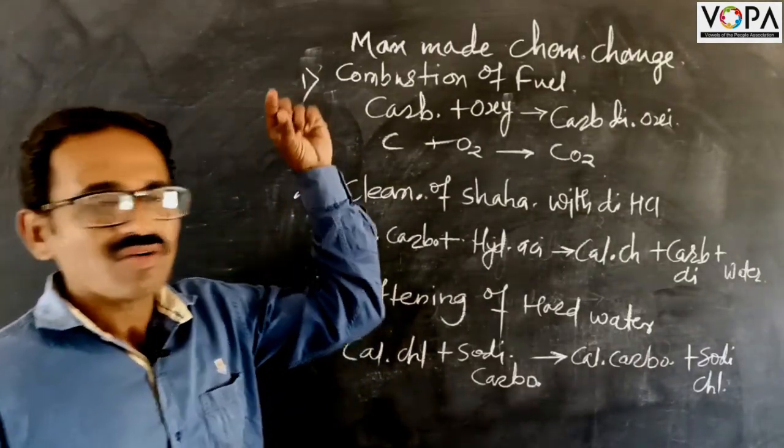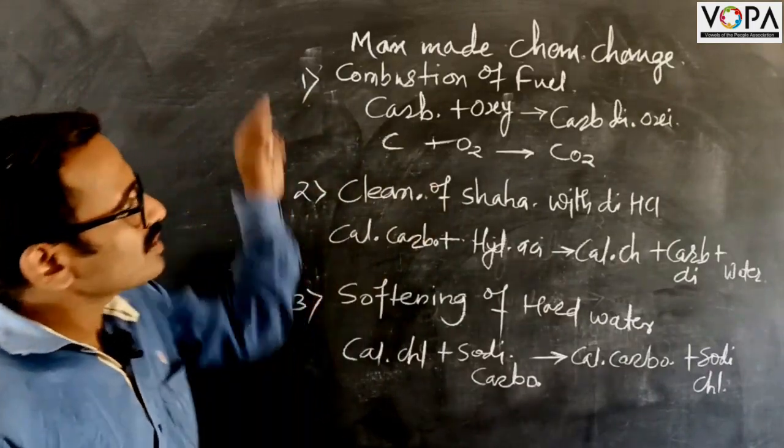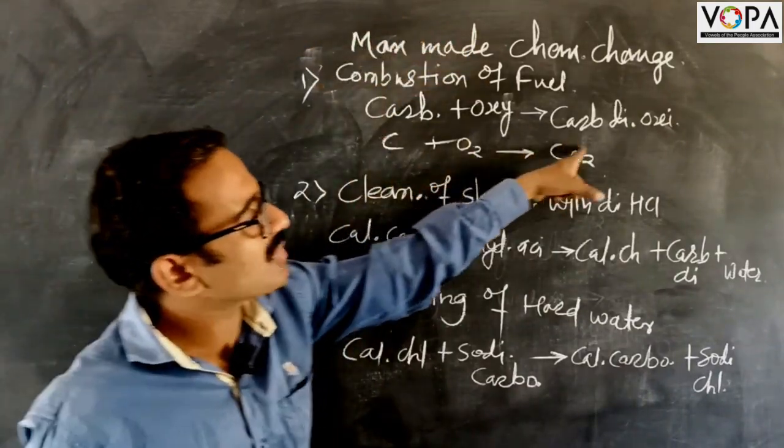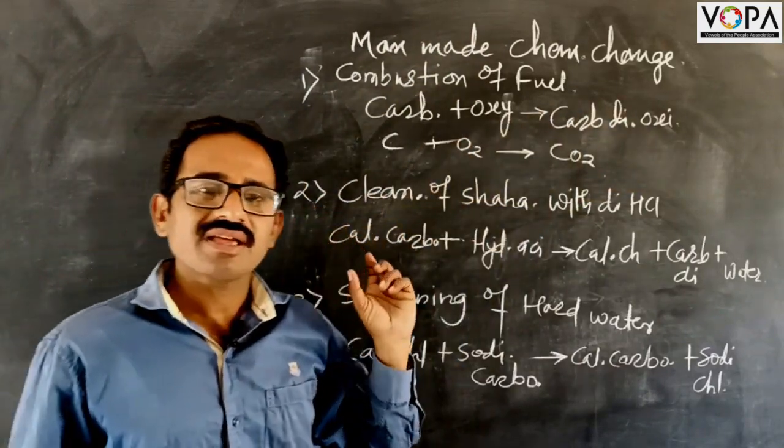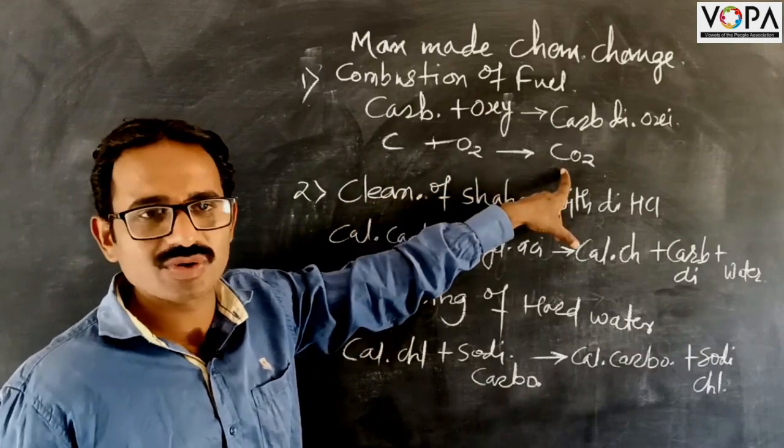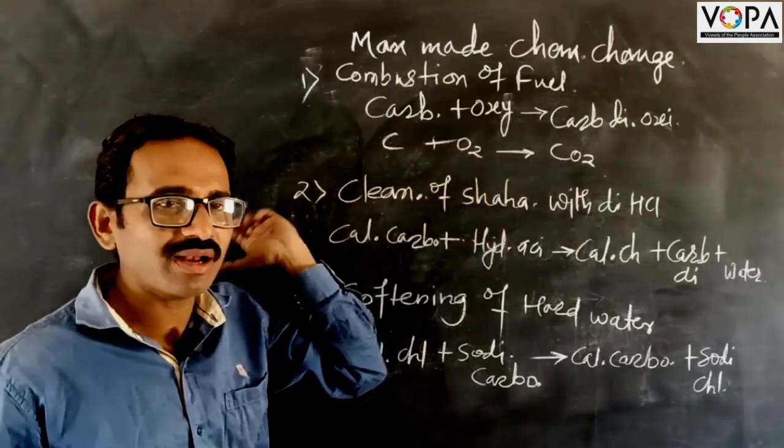Here, the word equation for this is carbon reacts with oxygen to form carbon dioxide. Its chemical equation is C plus O2 equals CO2. This is an irreversible process.